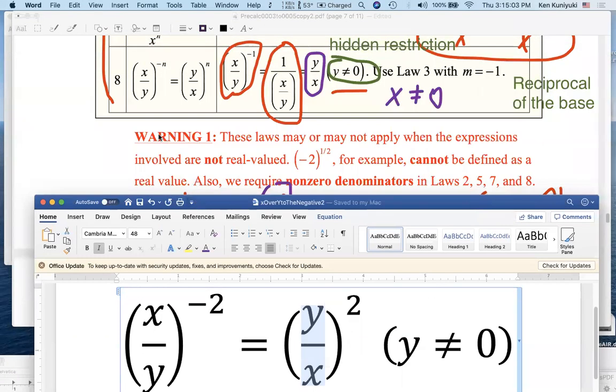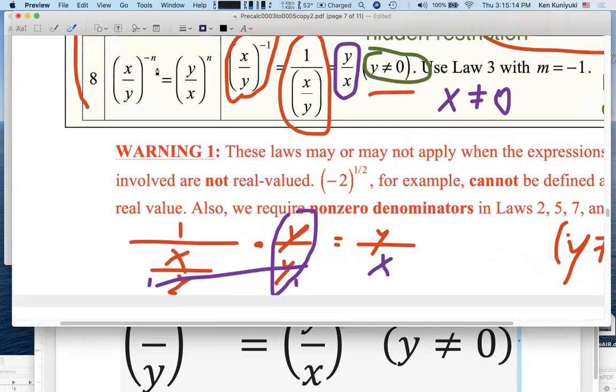In general, x over y all to the opposite of n is equivalent to y over x all to the n. To flip the sign on the exponent, to take opposites on the exponent, you also have to take the reciprocal of the base.